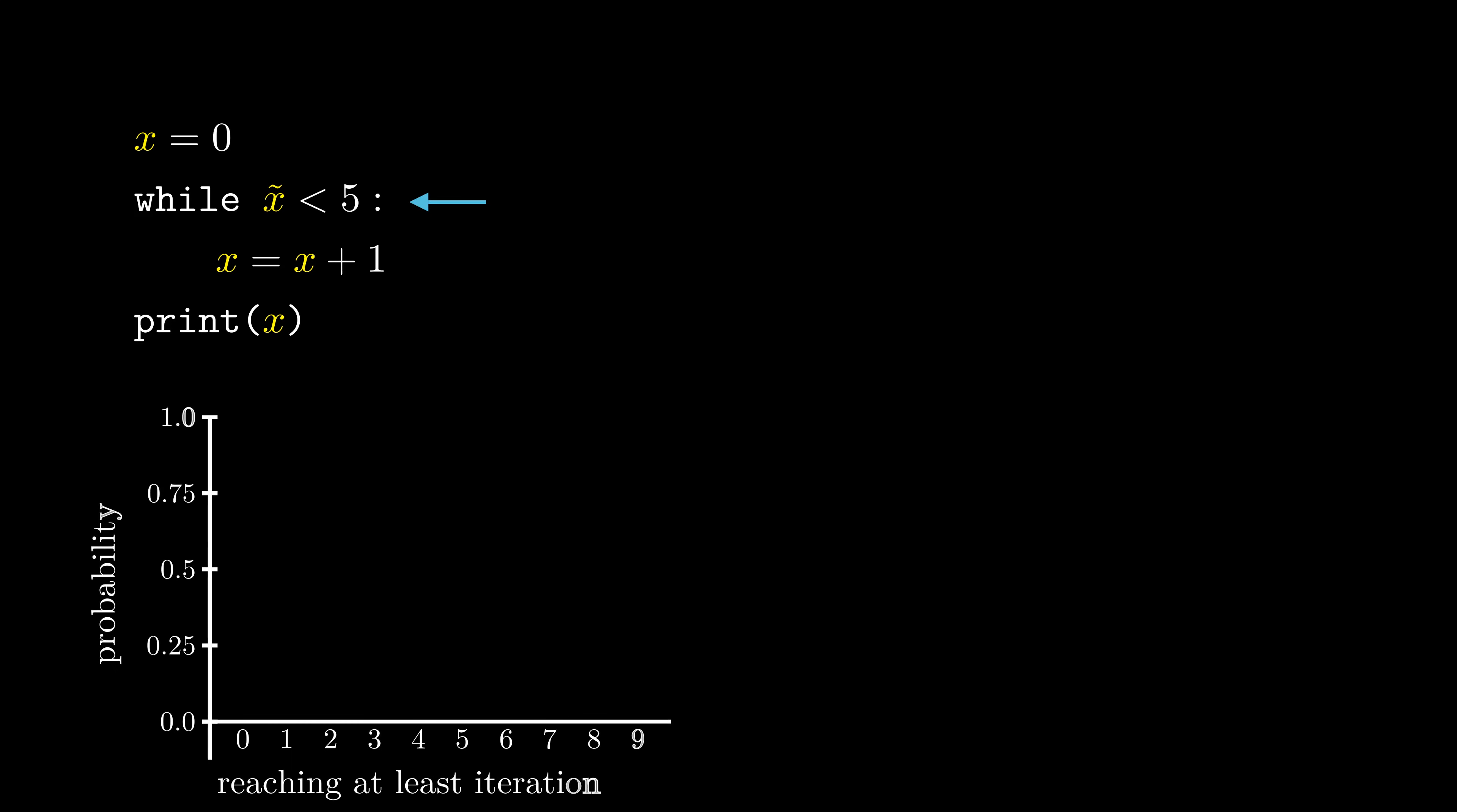We start with the probability that at least 0 iterations are reached, which is 1, because fewer than 0 iterations is not possible.